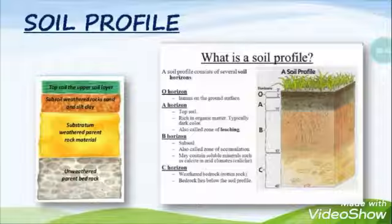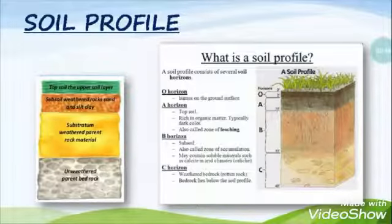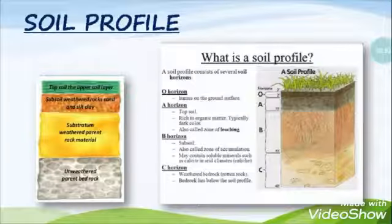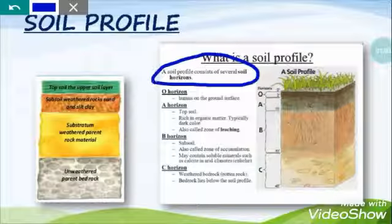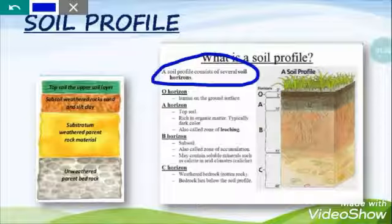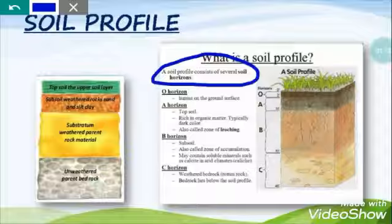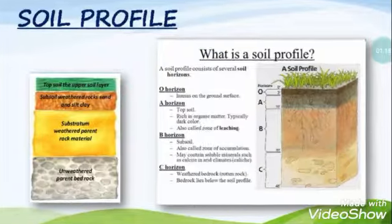Next, we are going to learn about soil profile. What is the meaning of soil profile? The soil is made up of different layers or horizons, and these layers or horizons of soil are known as the soil profile. If we take one cutout of the soil layer, we can see some clear distinct layers of the soil.